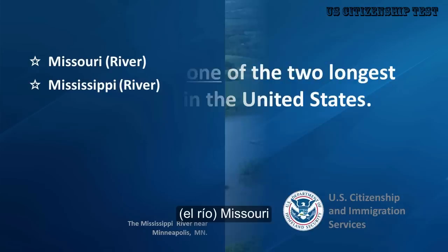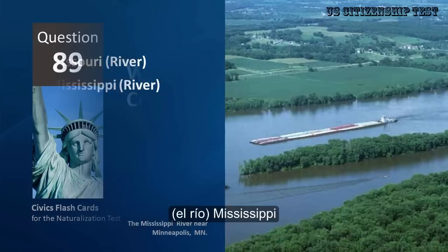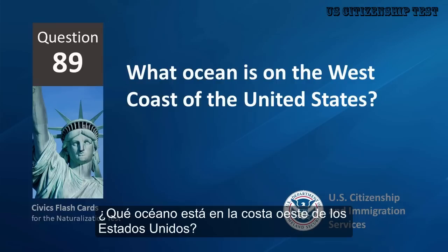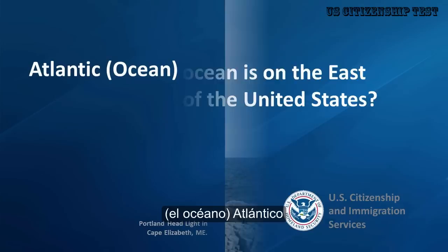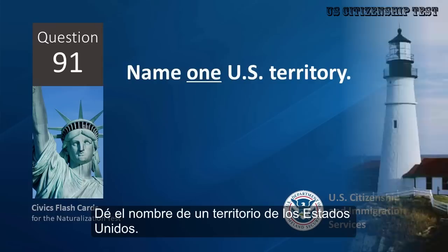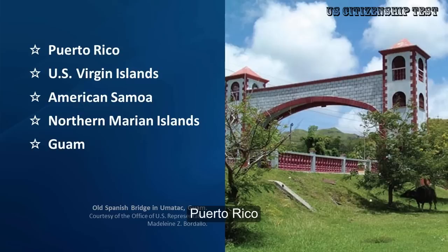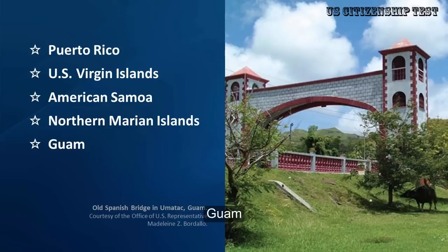Name one of the two longest rivers in the United States. Missouri River, Mississippi River. What ocean is on the west coast of the United States? Pacific Ocean. What ocean is on the east coast of the United States? Atlantic Ocean. Name one U.S. territory. Puerto Rico, U.S. Virgin Islands, American Samoa, Northern Mariana Islands, Guam.